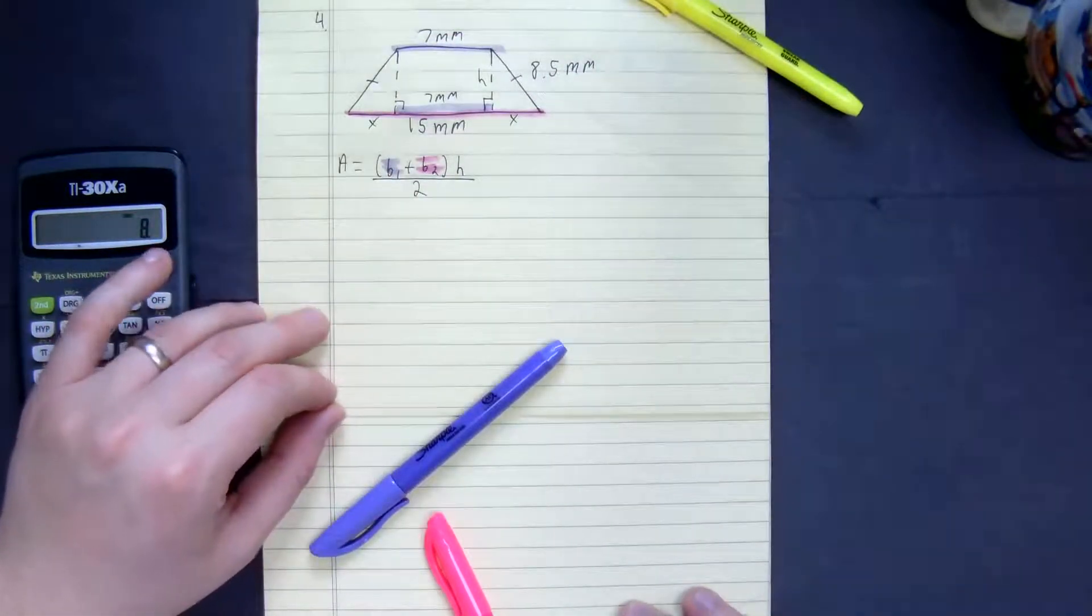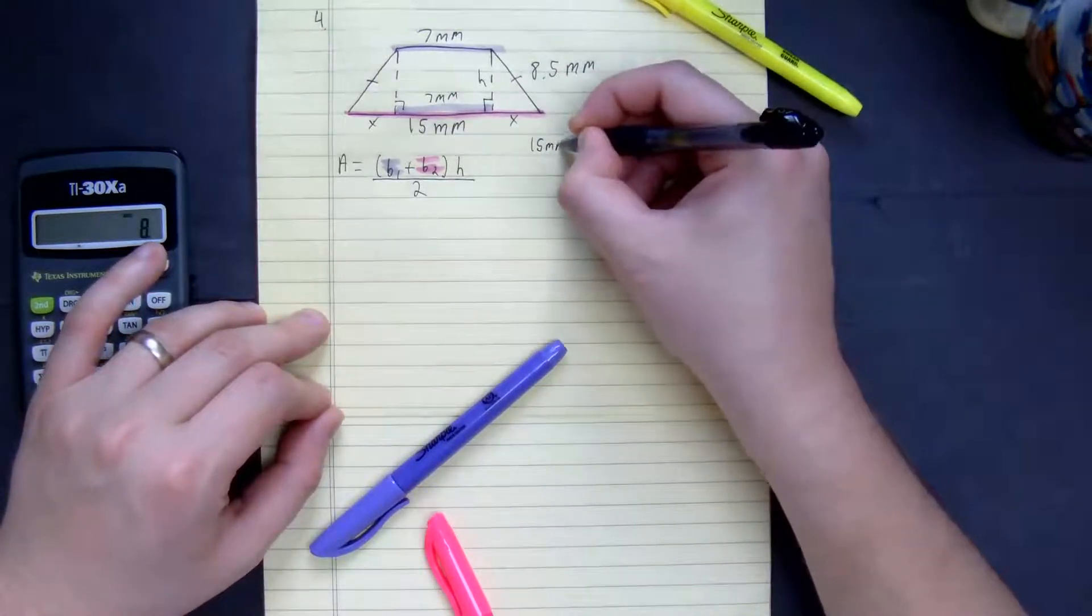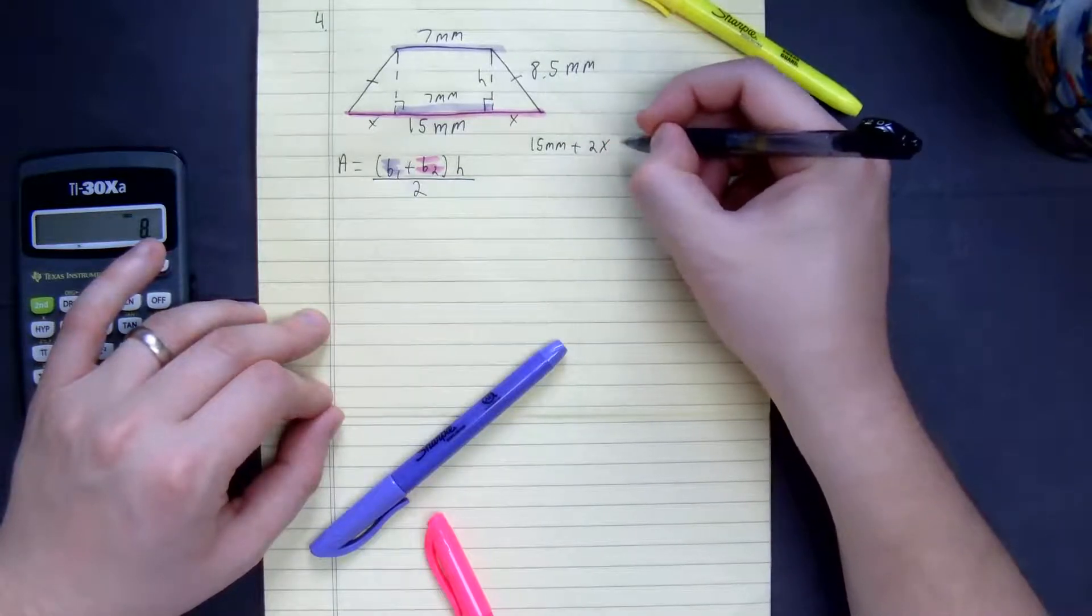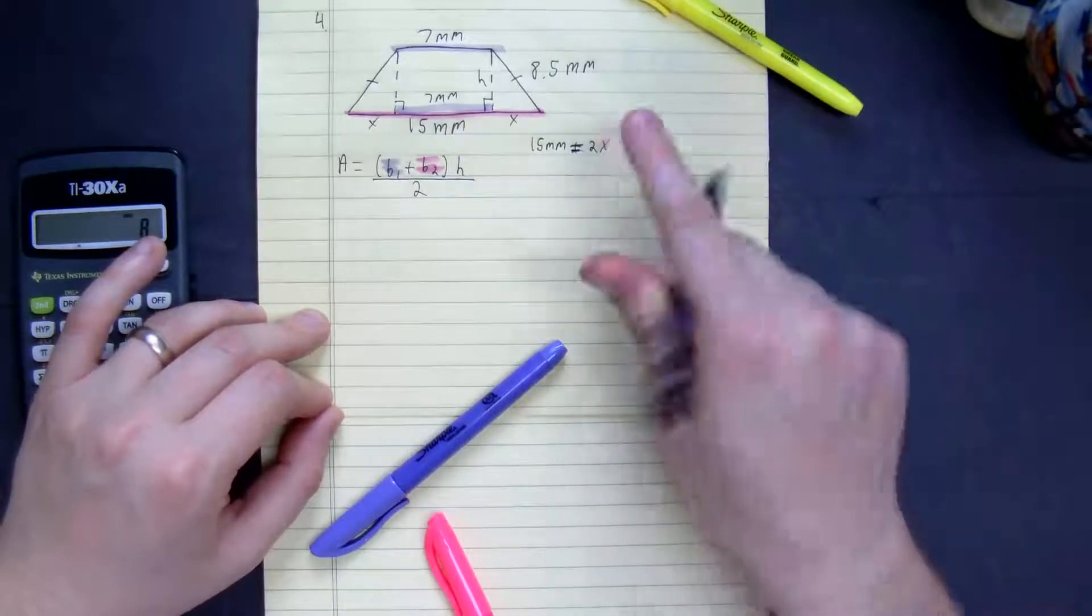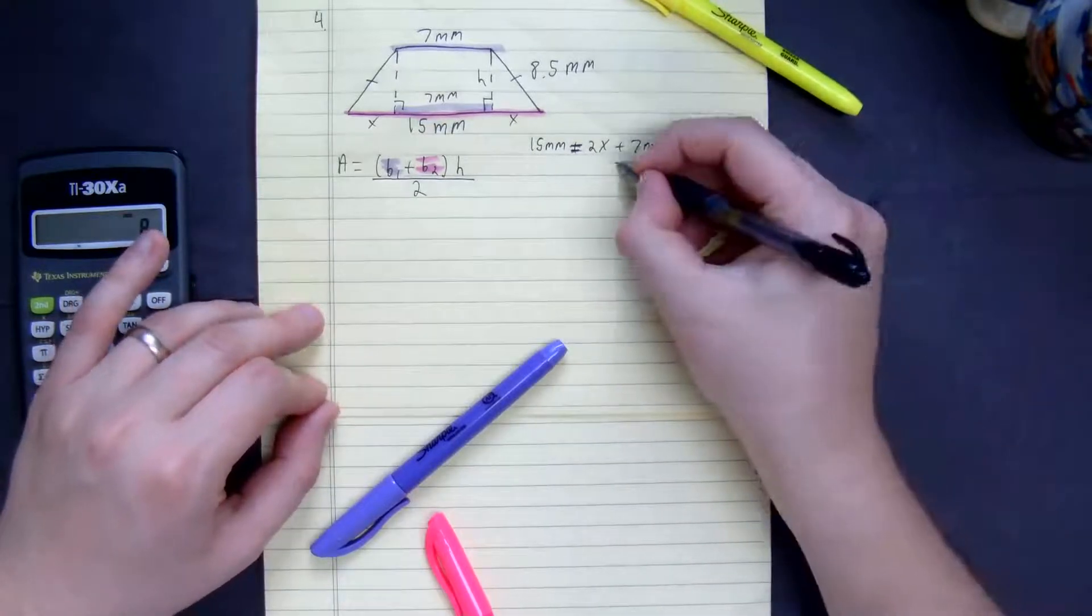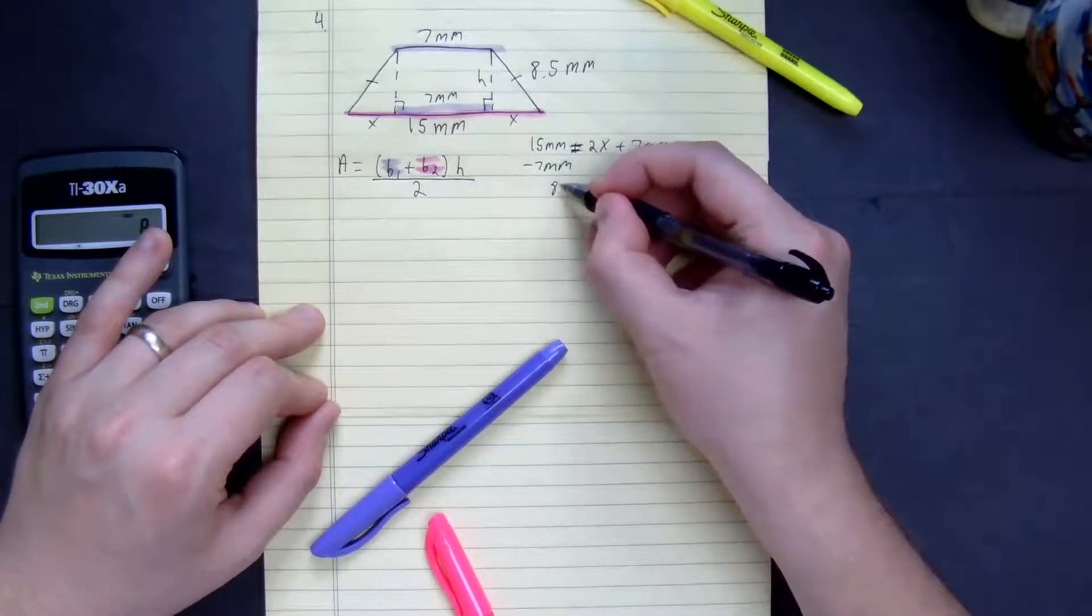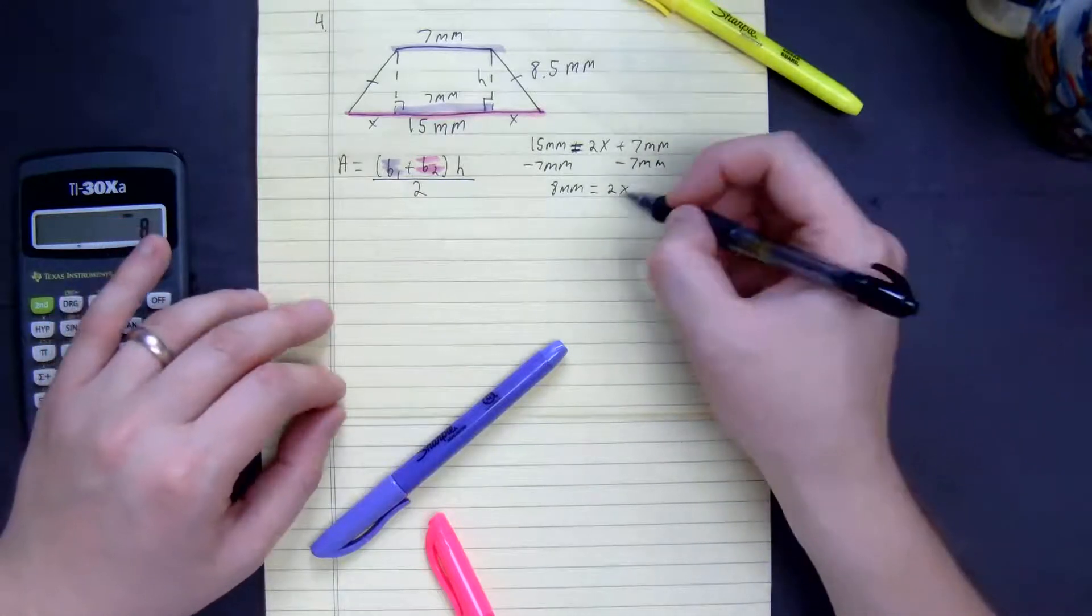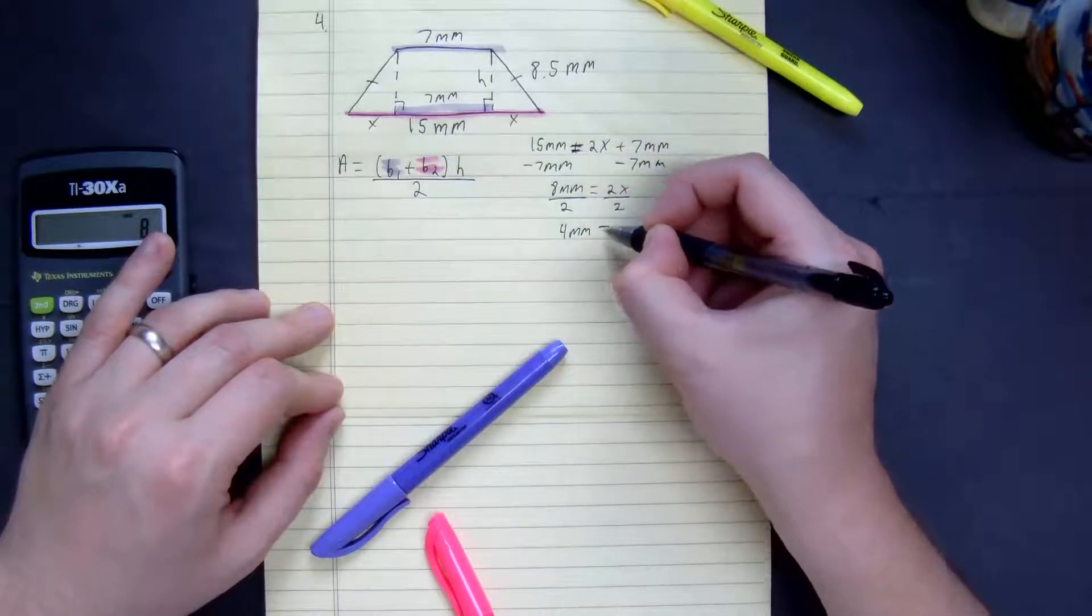So what we have is 15 millimeters plus 2x or 15 millimeters equals, I mean sorry, equals 2x plus 7 millimeters. First thing you do is you subtract the 7 millimeters. You get 8 millimeters equals 2x, divide both sides by 2. You get 4 millimeters equals x.